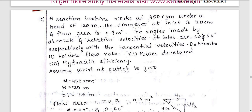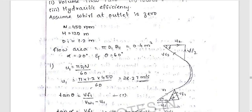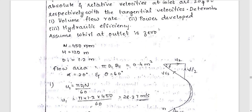Determine the volume of flow rate, power, and hydraulic efficiency. The whirl velocity at the outlet Vw2 is zero, meaning the discharge at the outlet is radial, i.e., the outlet angle is 90 degrees.